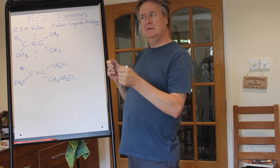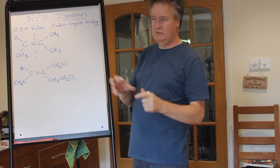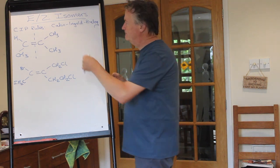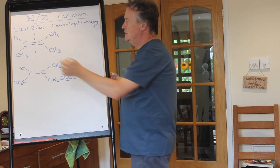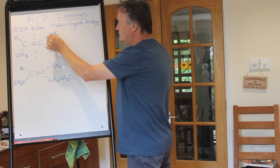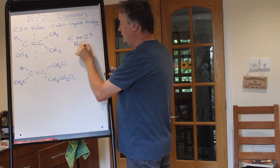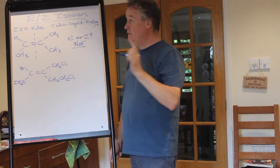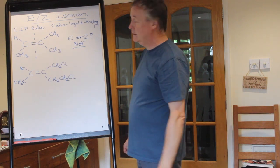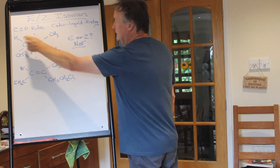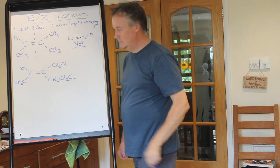A couple more compounds. First one: CH3, CH3, CH3, H - vertical line - CH3 and hydrogen are different, but CH3 and CH3 are the same on the other side. Don't fall into the trap of assuming it's E or Z just because it's an alkene - you do have to check. Those two are different but those are the same - as soon as those are the same, E/Z doesn't apply. Not E or Z.